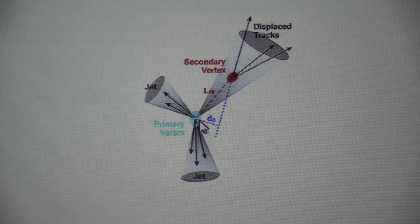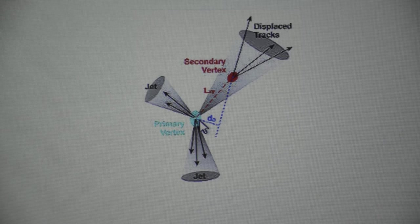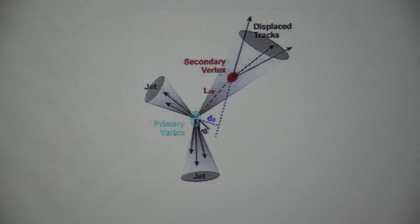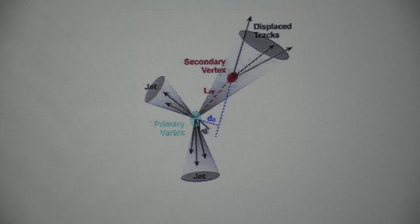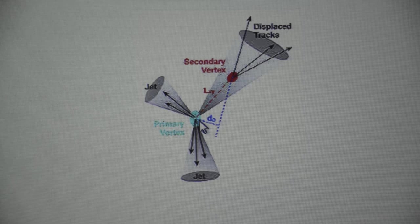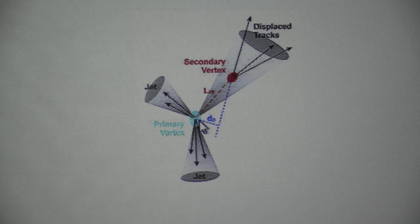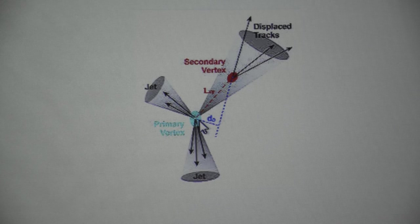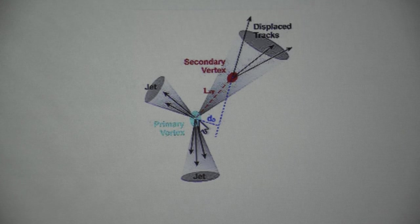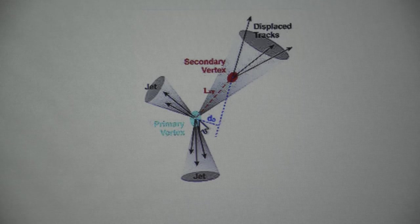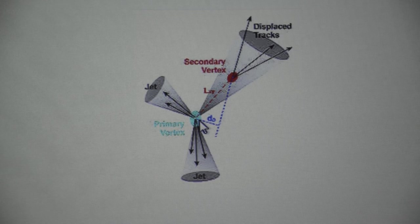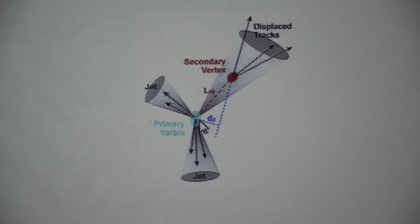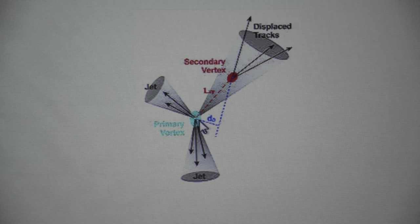Then most of the signal will be retained because it has indeed a B quark and as Arun was saying that nowadays the B tagging probability is 80 percent or something. So, most of the signal will be retained but most of the background will be rejected. So, this is the story of B tagging which is also a very useful selection criteria for rejecting the background.